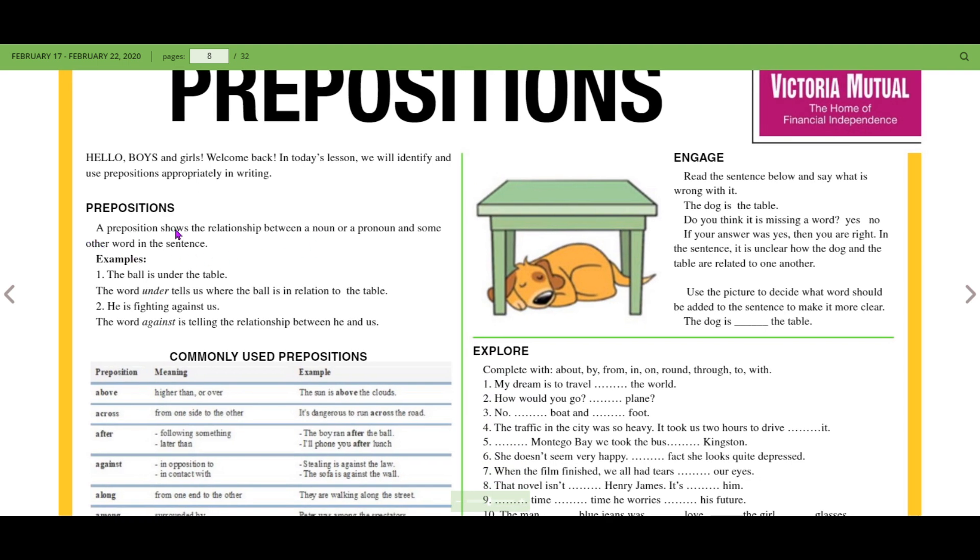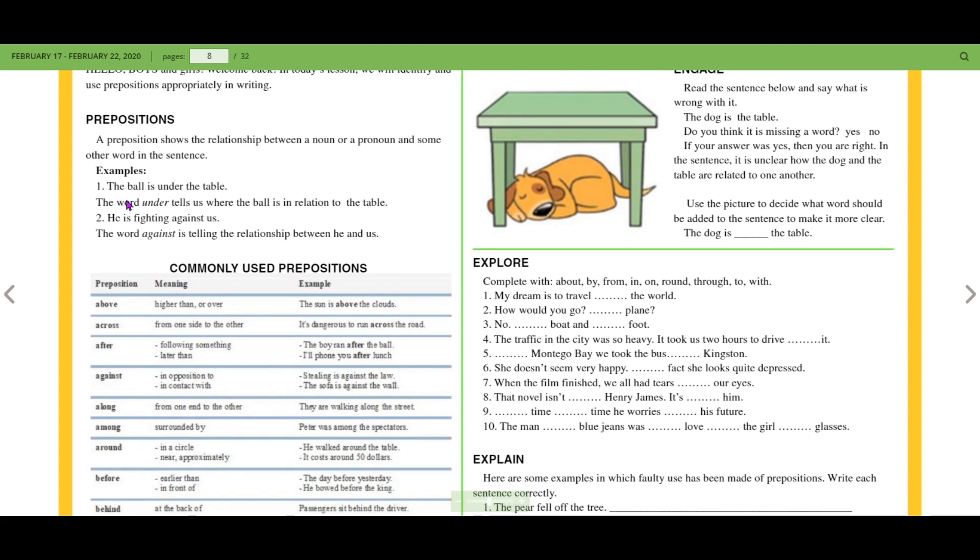A preposition shows a relationship between a noun or a pronoun and some other word in the sentence. For example, the ball is under the table. The word under tells us where the ball is in relation to the table. He is fighting against us. The word against is telling the relationship between he and us.